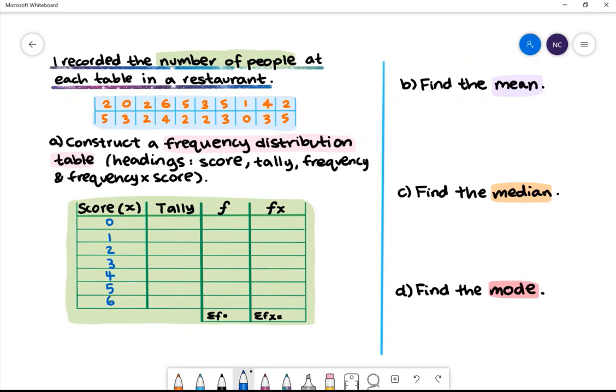Next we need to tally the scores. The best way to tally the scores is to cross them off as you go. We have 2, 5, 0, 3, 2, 2, 6, 4, 5, 2, 3, 2, 5, 3, 1, 0, 4, 3, 2, and 5.